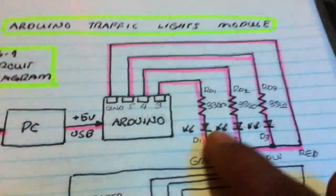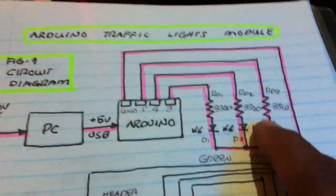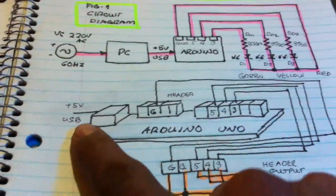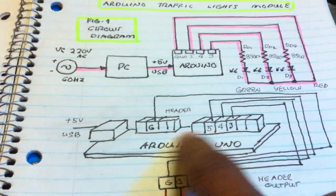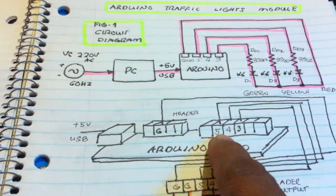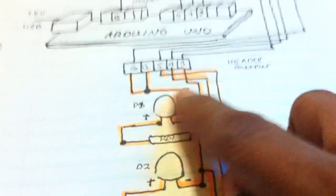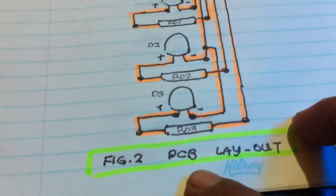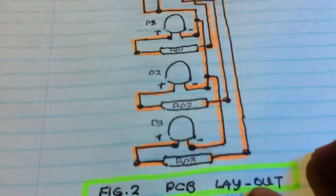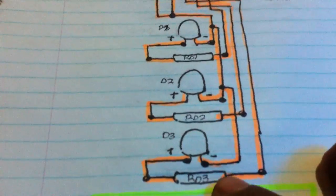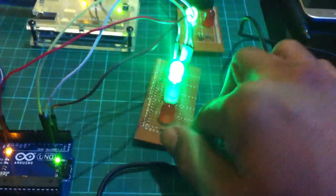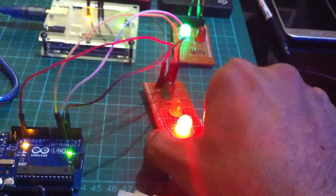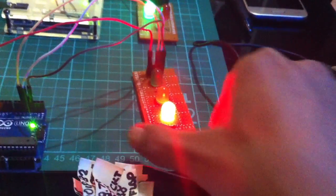We now have the Arduino with the computed resistor values. This is the actual PCB layout — the USB connection, the pin header of the Arduino, and the ground and pins 3, 4, and 5 connected to our traffic light module. You can see RD3, RD2, RD1 and the header on the layout.